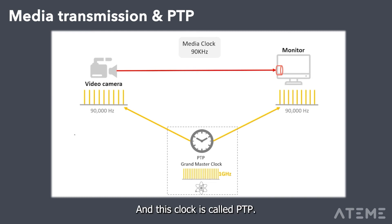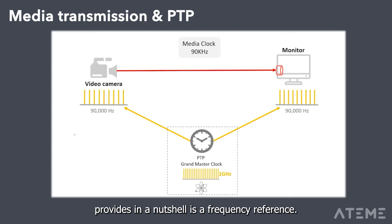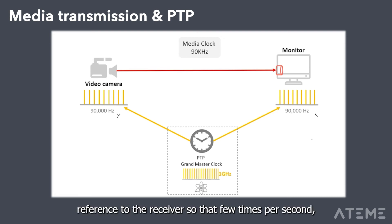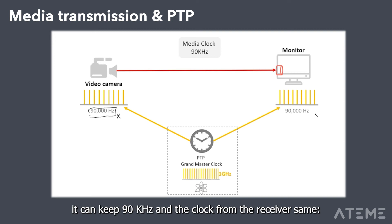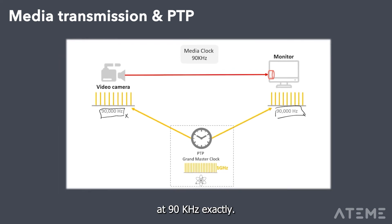This clock is called PTP, which will be the subject of the next section. In a nutshell, PTP provides a frequency reference to both the sender and the receiver. A few times per second, the sender's clock will re-sync to maintain exactly 90 kHz, and the receiver's clock does the same — re-syncing very frequently so that over time there is no offset, no frequency drift, and the cadence stays at exactly 90 kHz.